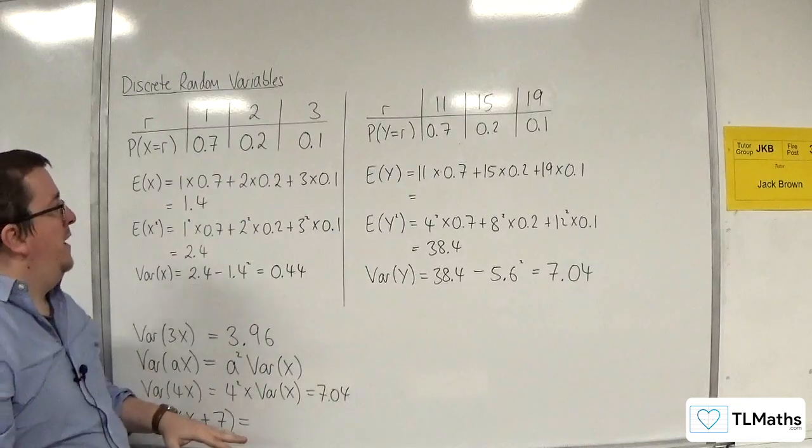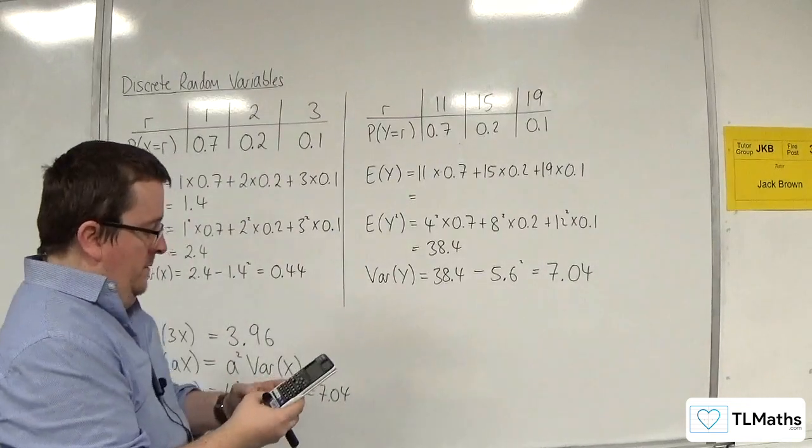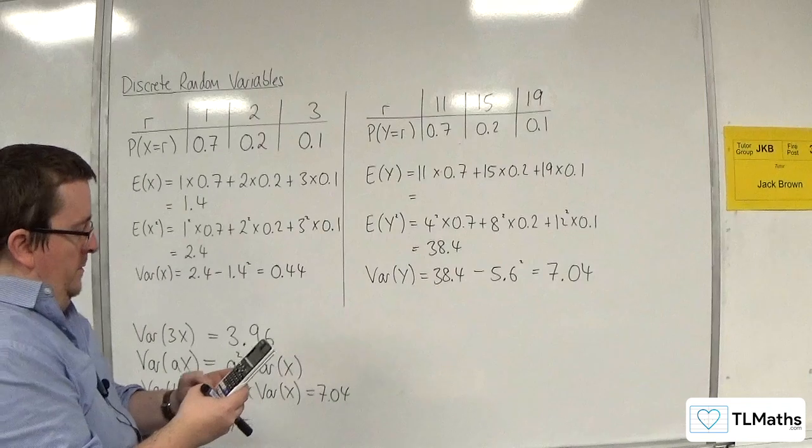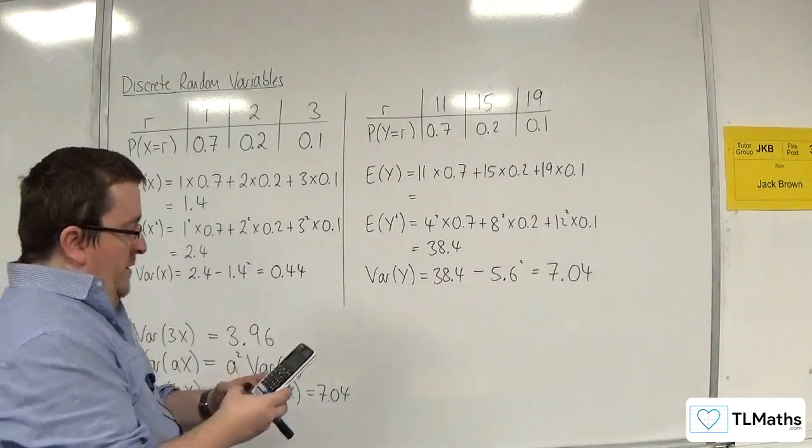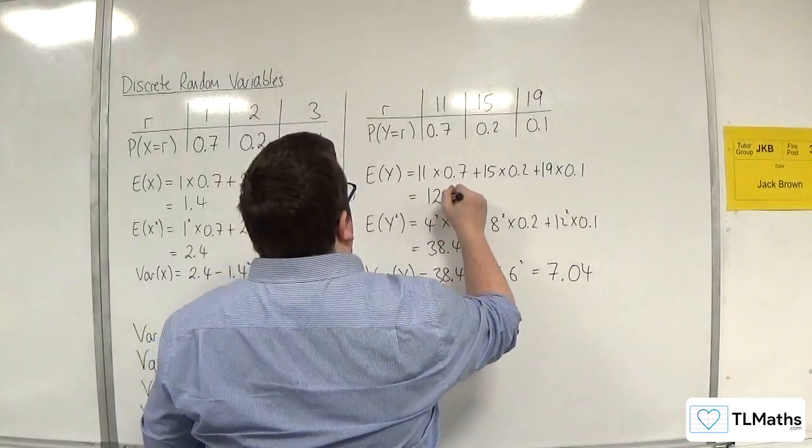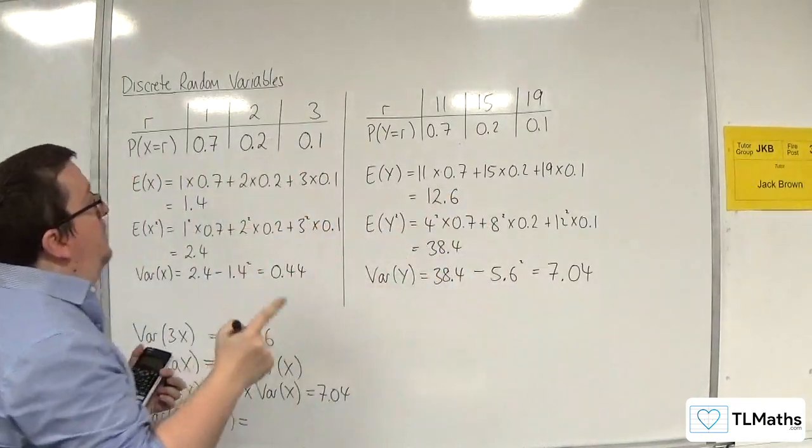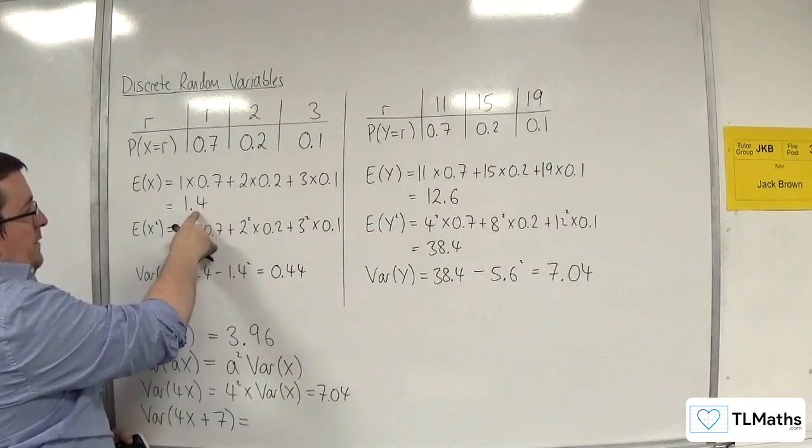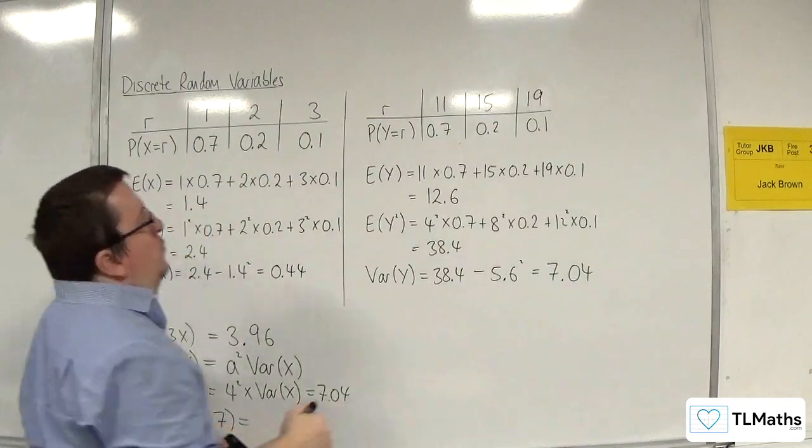You should be able to predict what it's going to be. From our knowledge of E of x, we get 12.6, which could be found by doing 4 lots of that plus 7.